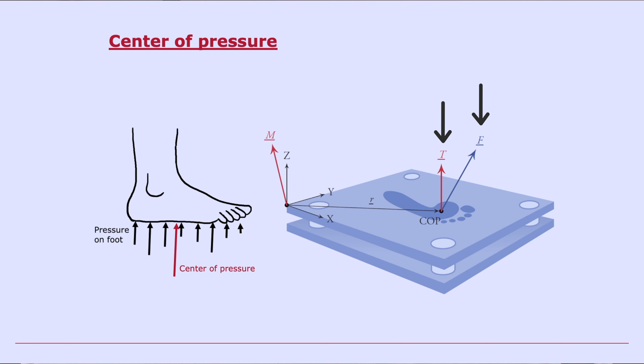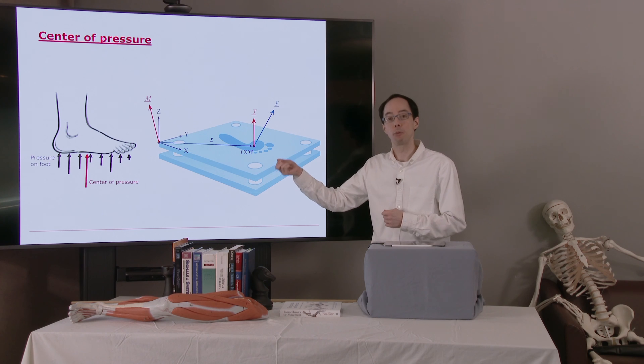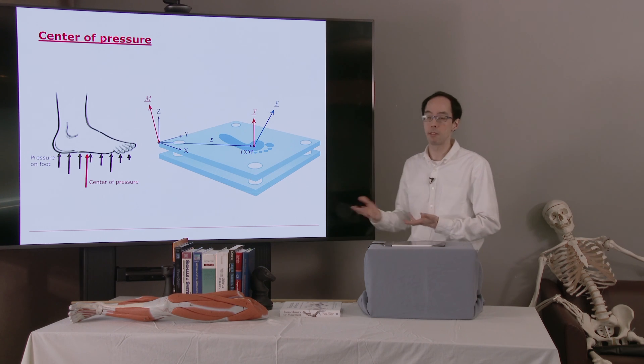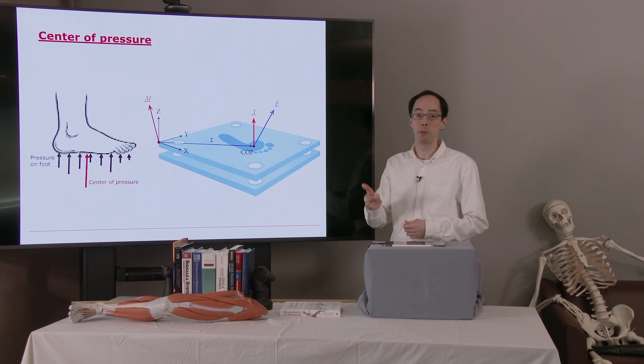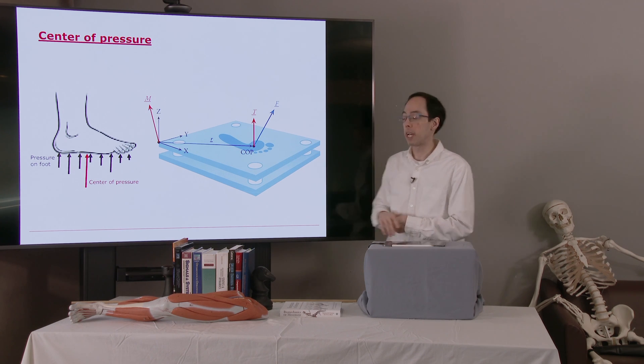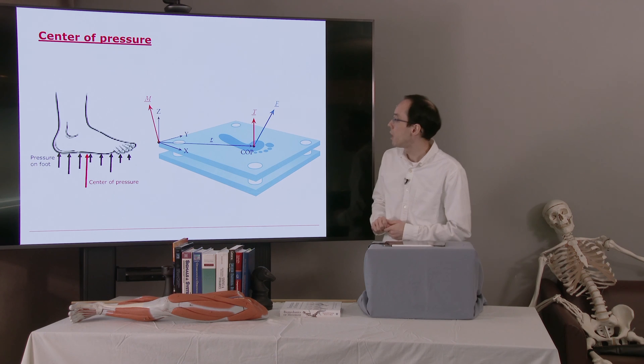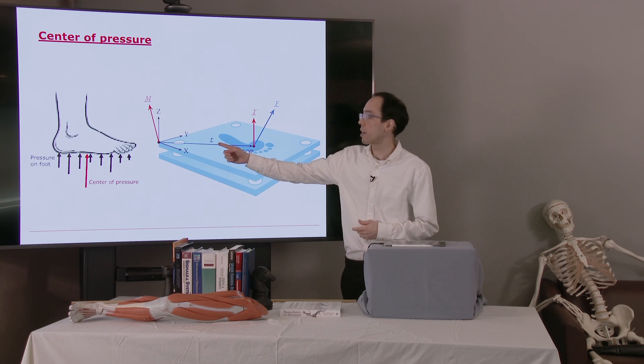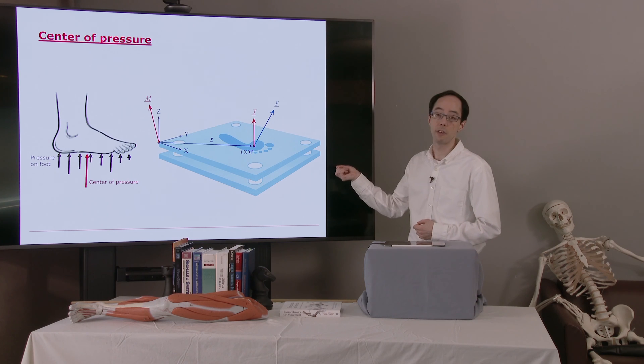We can apply the force wherever we want on the foot. But where we apply it will determine the moment we'll need to apply in order to have an equivalent system. The center of pressure is the particular point where that moment would be zero. Now here on the right we have the more general case that we have in a motion capture experiment in the 3D case. So here's the center of pressure. And what we want to determine is this vector r. It's the vector from the origin of the force plate to the center of pressure.